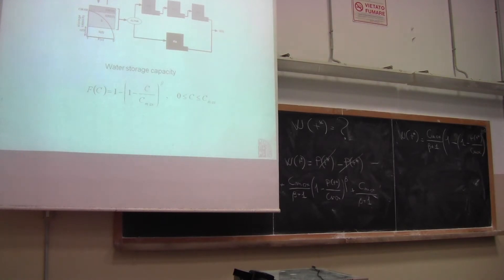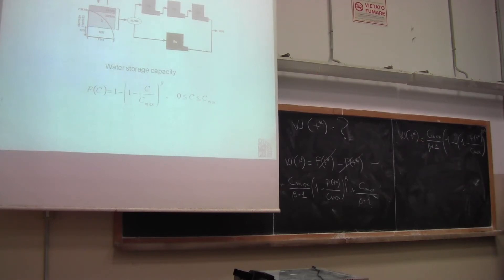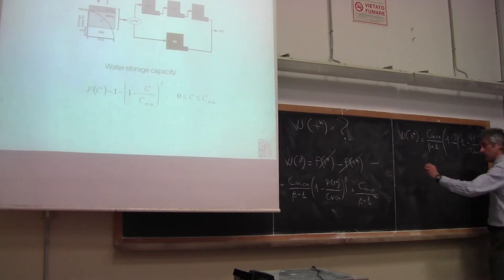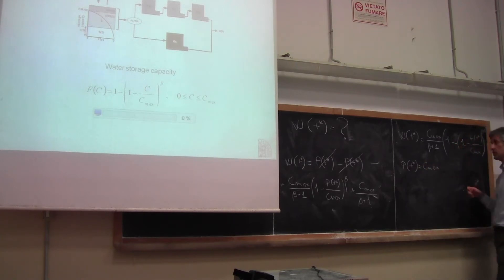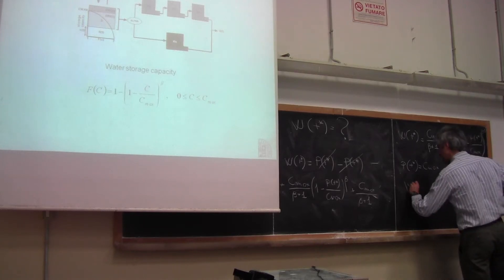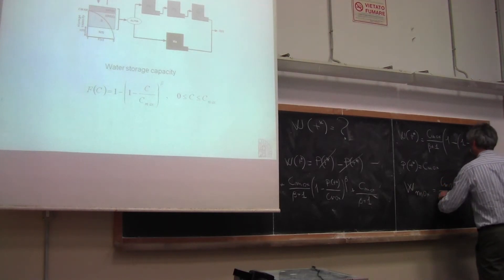An interesting question is: what is the maximum water storage in the catchment? The maximum value of W occurs when the catchment is full of water — when it's saturated. Therefore you should equate precipitation to Cmax. In order to get the maximum storage, we set the condition P(T*) equal to Cmax, which is the limiting condition for applying this relationship. Doing that, we get that Wmax is simply equal to Cmax divided by beta plus 1.